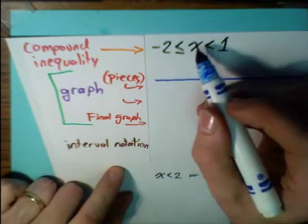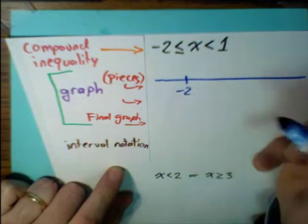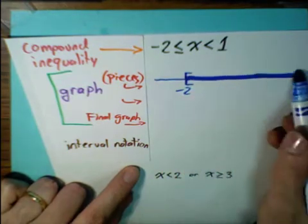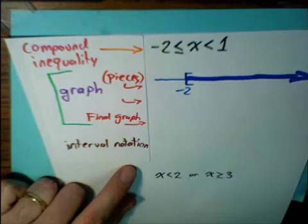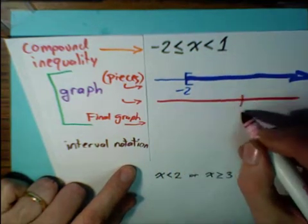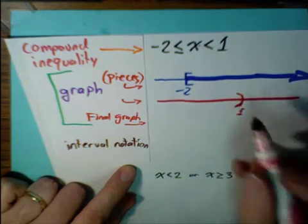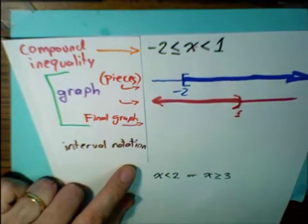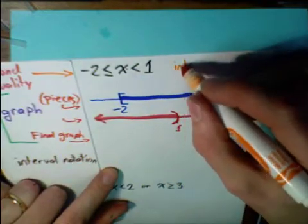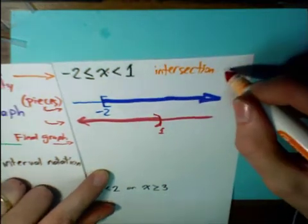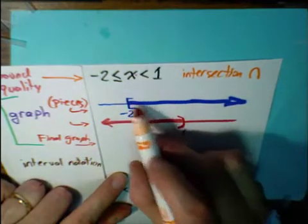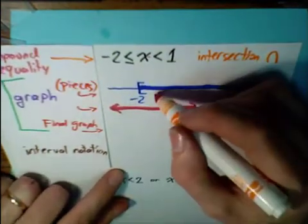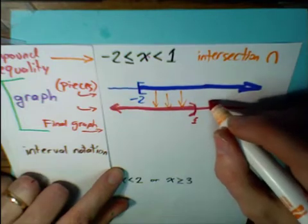Let's take a look at what's happening here. X is greater than or equal to negative 2, so at negative 2 we use a bracket because it's included, and we shade to the right. The other piece is x is less than 1 — we use a parenthesis and shade to the left. Since x is bounded by both inequalities, this is an intersection: x ≥ -2 intersected with x < 1. We want only the points common to both.